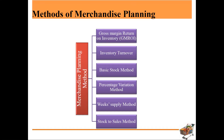When it comes to methods of merchandise planning, we need to consider several points. Number one is Gross Margin Return on Inventory (GMROI). Then there is the percentage variation method, the weeks supply method, and the stock-to-sale method. These are the things we need to consider in the merchandise planning method.